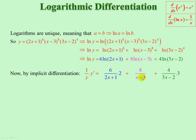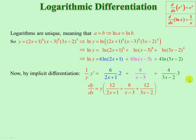Plus 8 over x minus 3, times 1 — derivative of the inside. Then 4 over 3x minus 2, times 3 — derivative of the inside. And therefore y prime, dy by dx, equals that expression multiplied up by y on the other side. And we have finished.